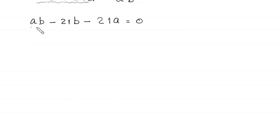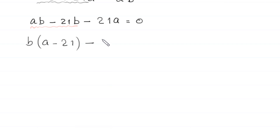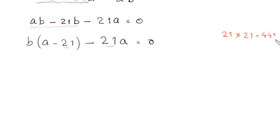From the terms ab minus 21b, we can factor out b to get b times (a minus 21) minus 21a equals 0. Now if we multiply 21 by 21, we get 441, so we add 441 to both sides.